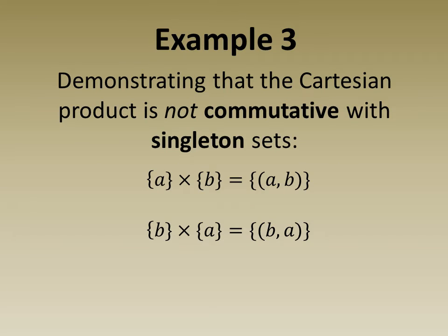In example 3, we demonstrate that the Cartesian product is not commutative with singleton sets. Note that the ordered pairs within the sets are different.